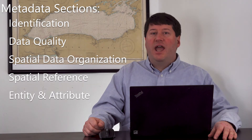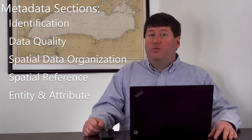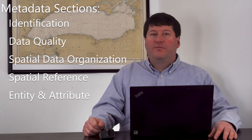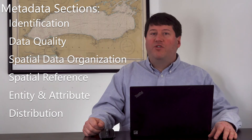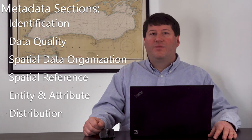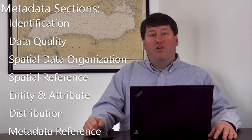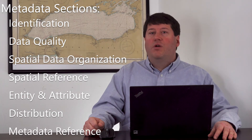Additional common sections include entity and attribute, or what does the data show and what are the attributes associated with each feature in the dataset; distribution, or how to acquire the data in terms of a person, organization, and contact details; and the metadata reference, or who created and documented the metadata and their contact information.